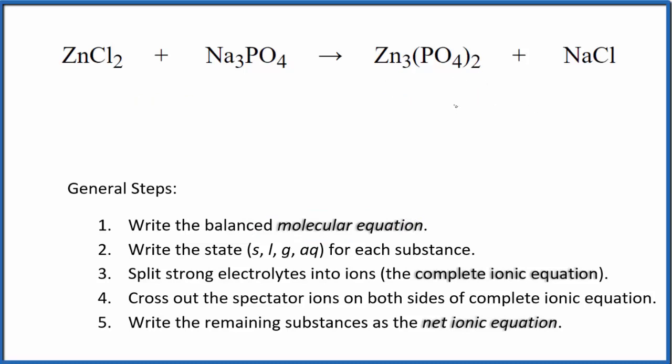Probably best to balance the phosphates first. I have two phosphates here and just one here. If I do that, put a two, that balances the phosphates. Two times three, six sodium. So I need to put a six in front of the sodium chloride, balances the sodium atoms, six chlorides. So I'll need a three here and we have three zincs here, three here. So this is the balanced molecular equation.